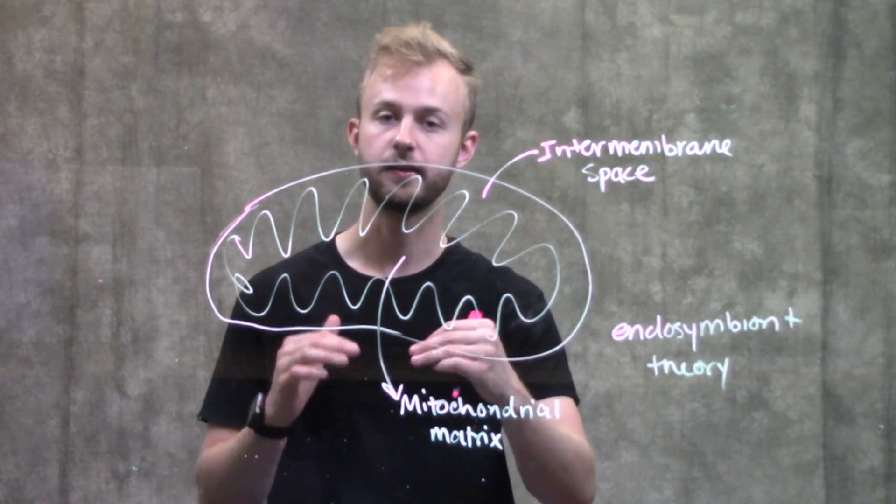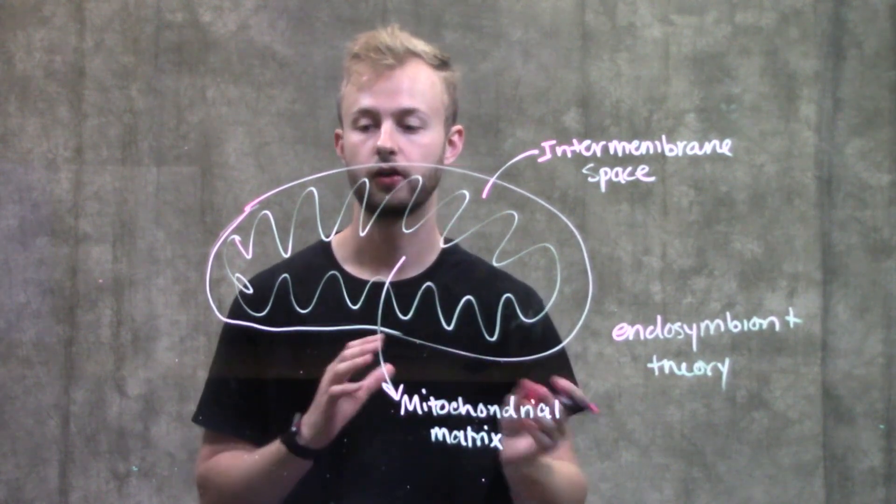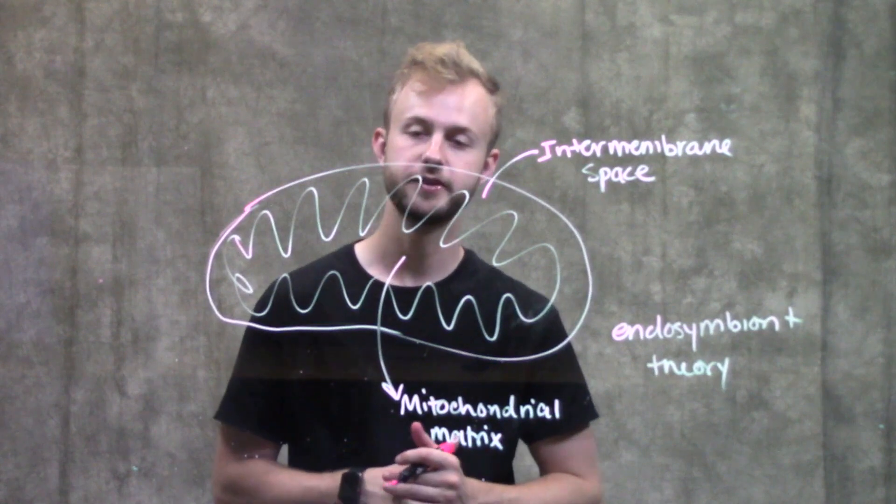That's why they have their own ribosomes, their own DNA, and kind of their whole own little system going on within the mitochondrial matrix.